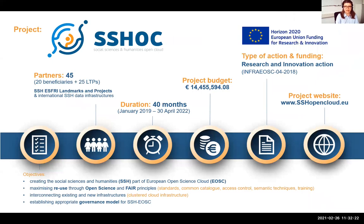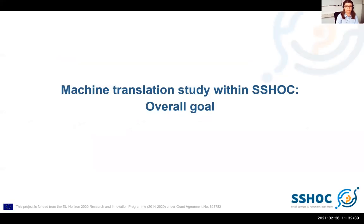Social Sciences and Humanities Open Cloud is a project funded by the EU framework program Horizon 2020 and unites 45 partner organizations in developing the social sciences and humanities area of the European Open Science Cloud. Within this project we have conducted a machine translation study. GESIS and UPF are working on applying computer-assisted translation tools in social surveys by using machine translation to translate survey questions.